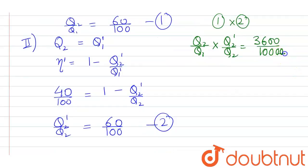Which on solving, 100 cancels out with 100, Q₂ cancels out with Q₂. So it will be Q₂'/Q₁ will be equal to 36/100.